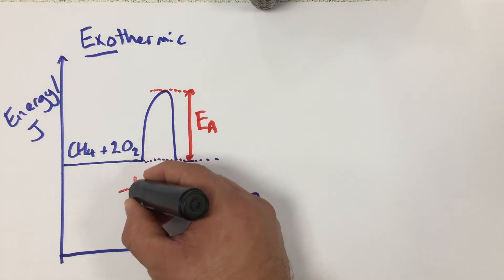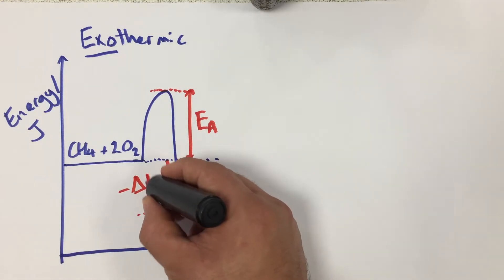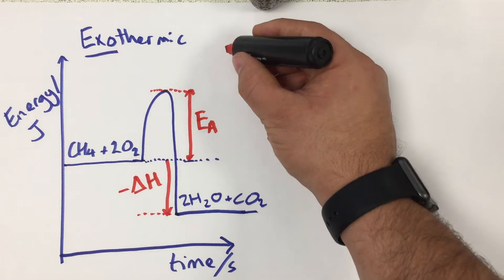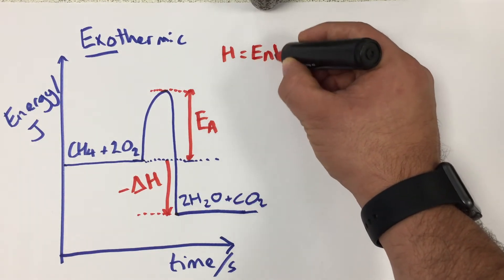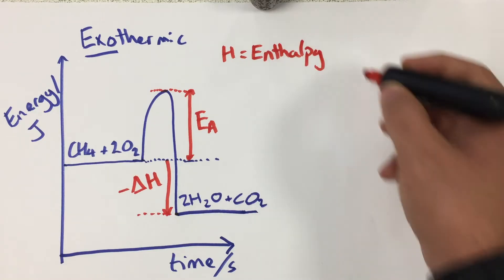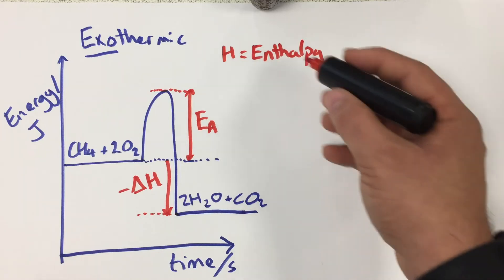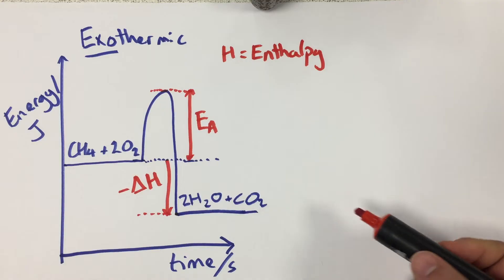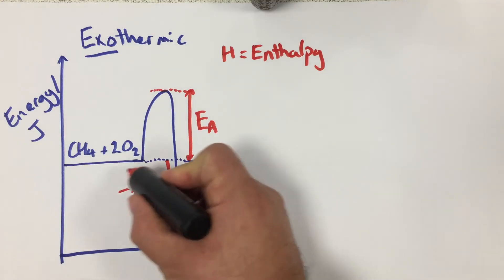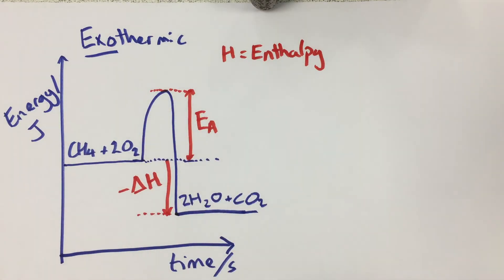We call this negative delta H — delta meaning 'a change in' — and we use H for enthalpy. Enthalpy is the same as energy but it's what chemists use; it's energy per mole. So enthalpy and energy are pretty much the same thing. Because it has a negative delta H, this is an exothermic reaction, meaning energy or heat is given out.